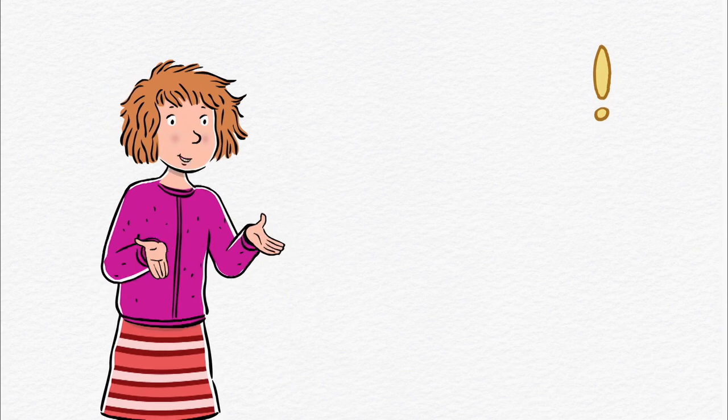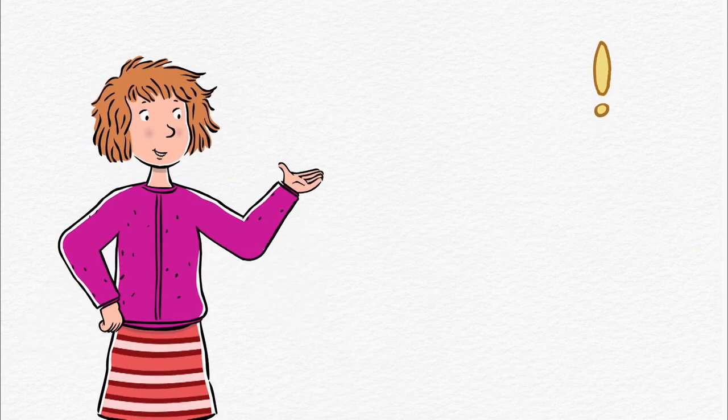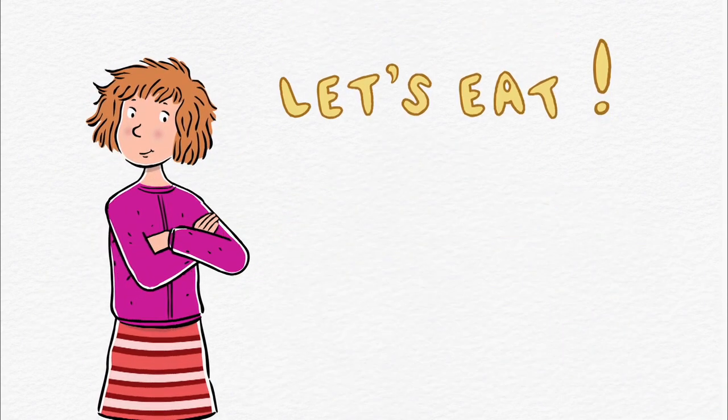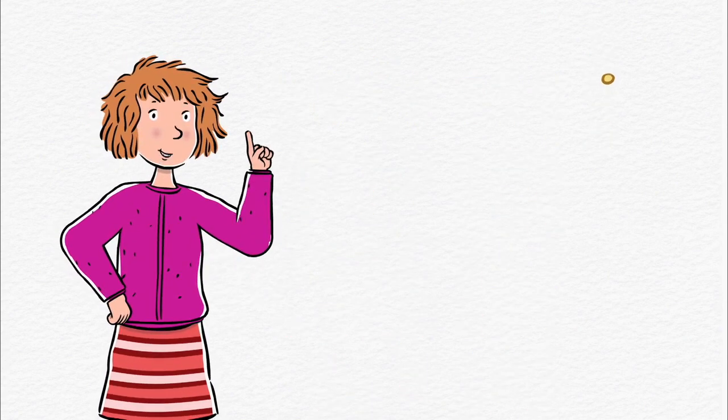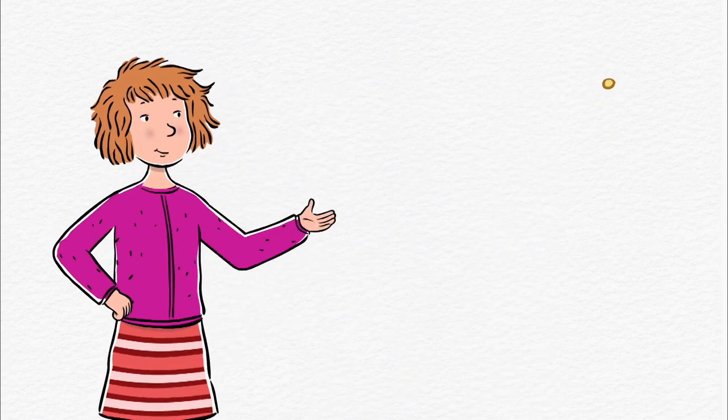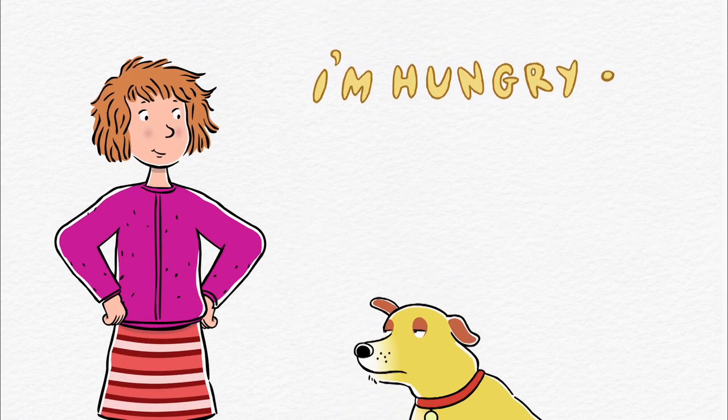You put an exclamation point at the end of a sentence when you want to show a lot of emotion, like... Let's eat! Exclamation point. A period goes at the end of a sentence when it's not a question or an exclamation, like... I'm hungry. Period.